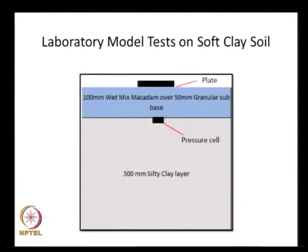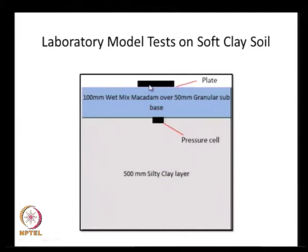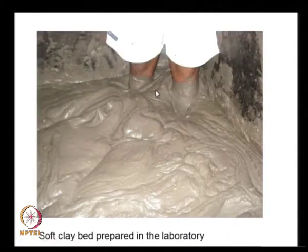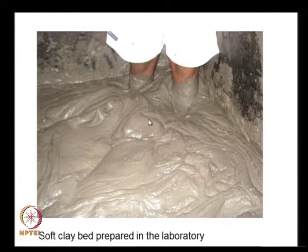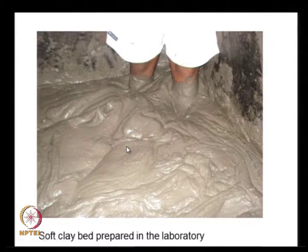The laboratory setup cross-section shows a 500 mm thick very soft silty clay layer, with a pressure cell on top to measure pressures transmitted through the geocell layer, then a 100 mm thick wet mix macadam layer, a 50 mm granular sub-base material on top of the geocell, and a loading plate on top. The soft clay bed was so weak that anyone standing on it would sink up to their knees. One geotextile separator layer was placed on the soft clay, then the geocell filled with GSB was constructed, and then the load test was performed.